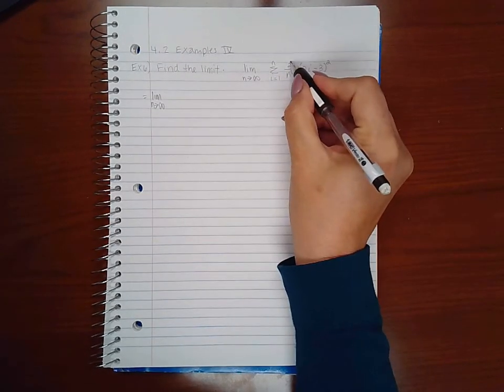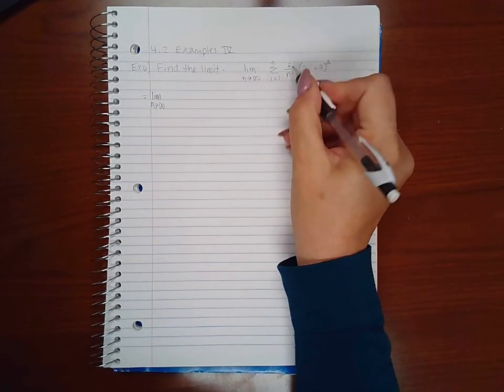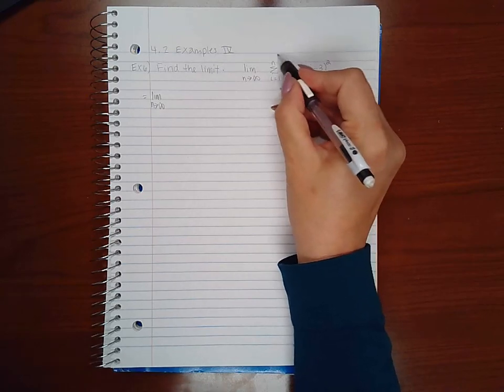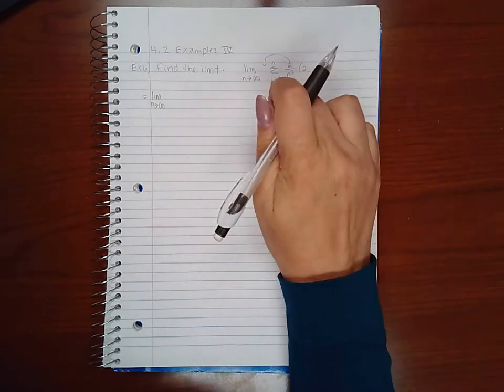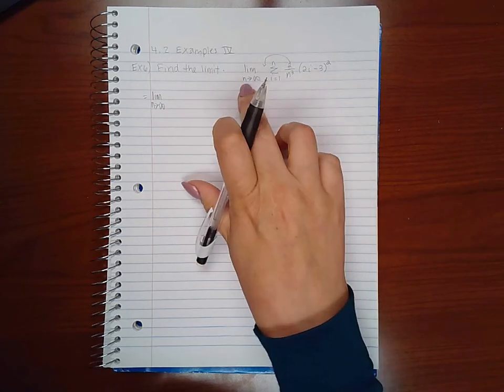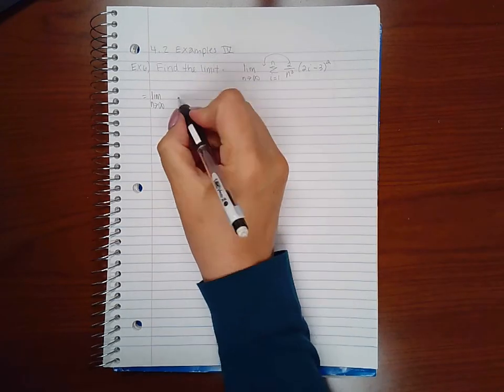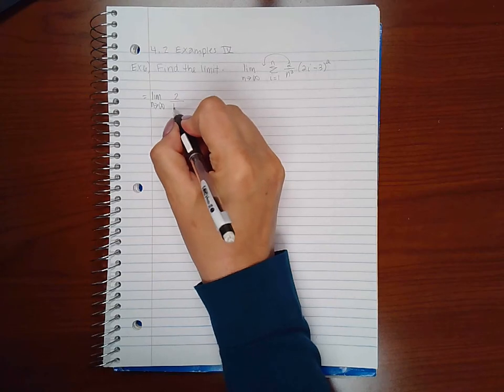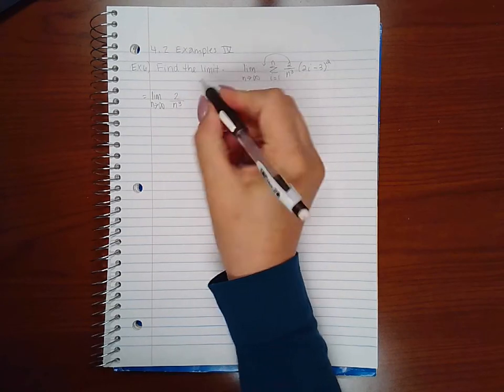So I'm going to take this fraction. It does not have an i in it, so it will not affect each term to the front of the summation. I cannot take it to the front of the limit because it does have an n and n will go to infinity, so I'm just going to take it in front of the summation.